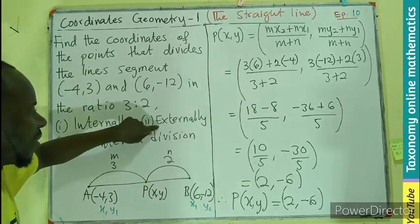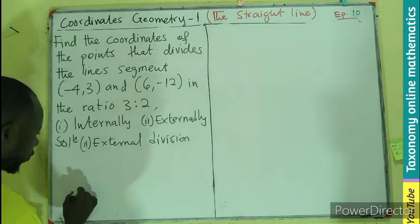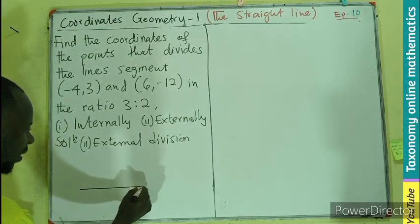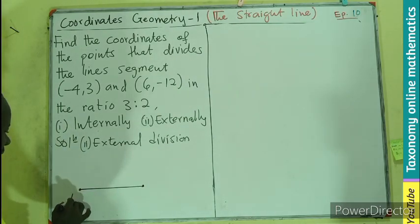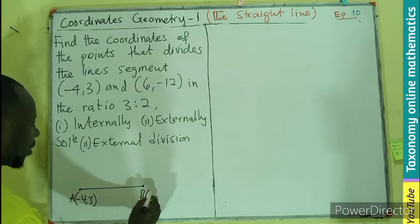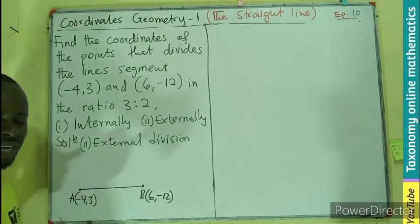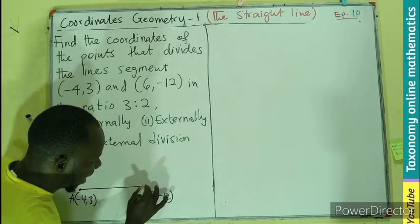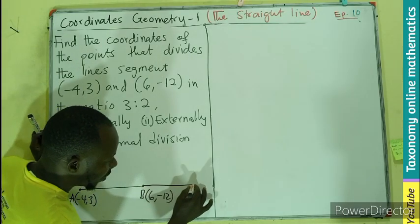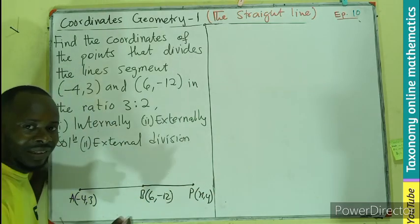So now, the second one is to go for external division. Let's see what that value will be. So our line segment could also be, let's say, line segment A (-4, 3), B (6, -12). This is a line segment. Then this line segment is divided externally.